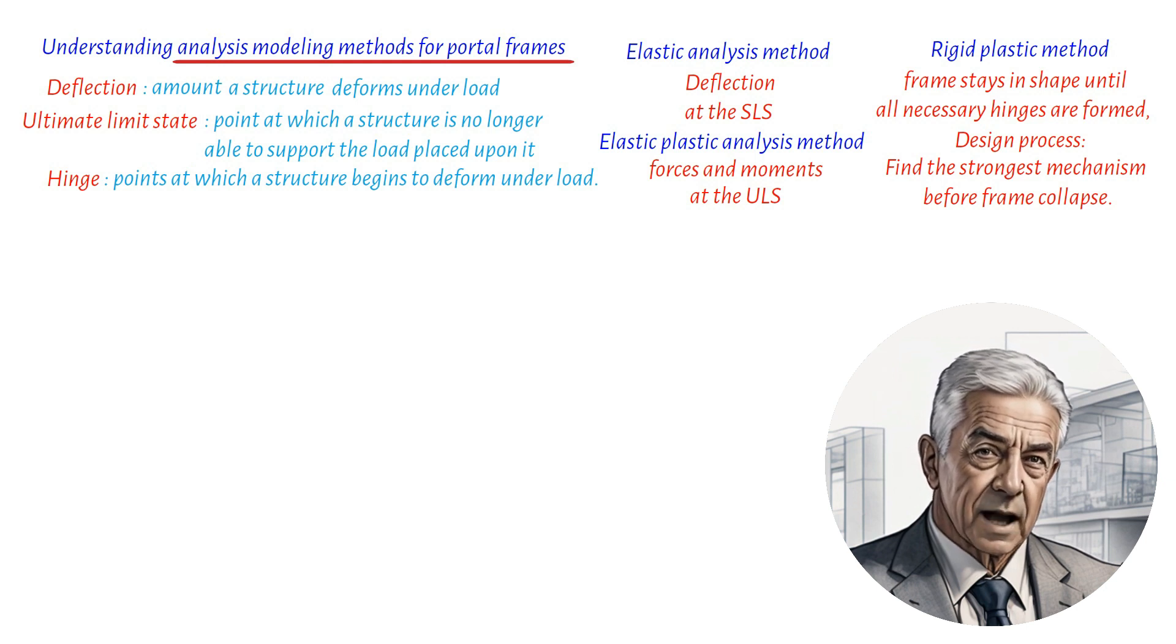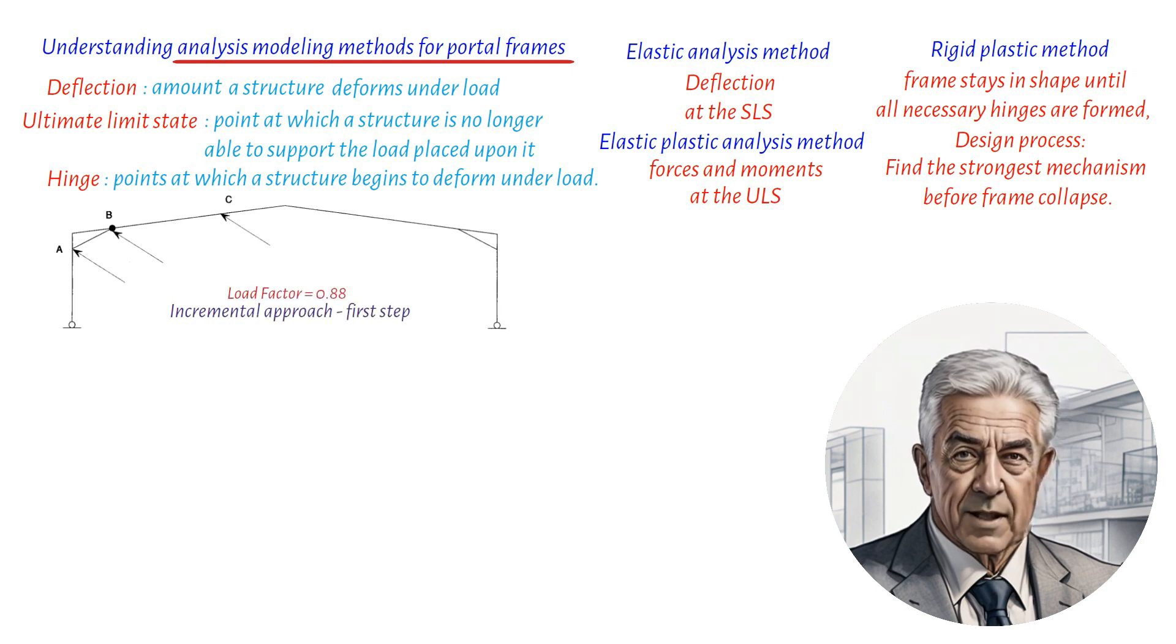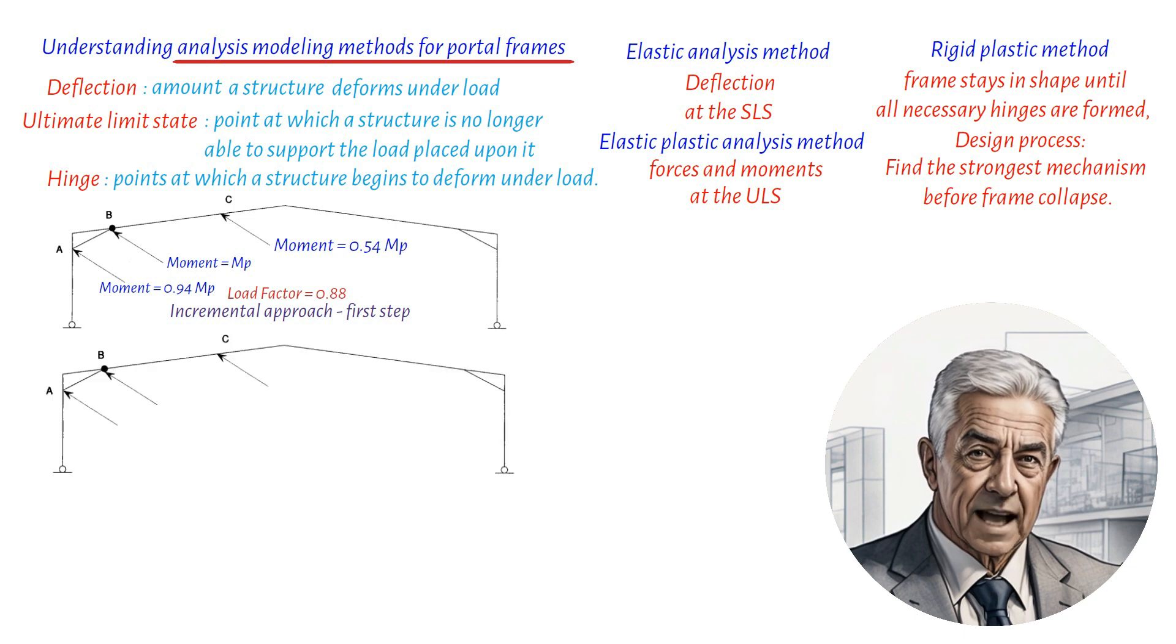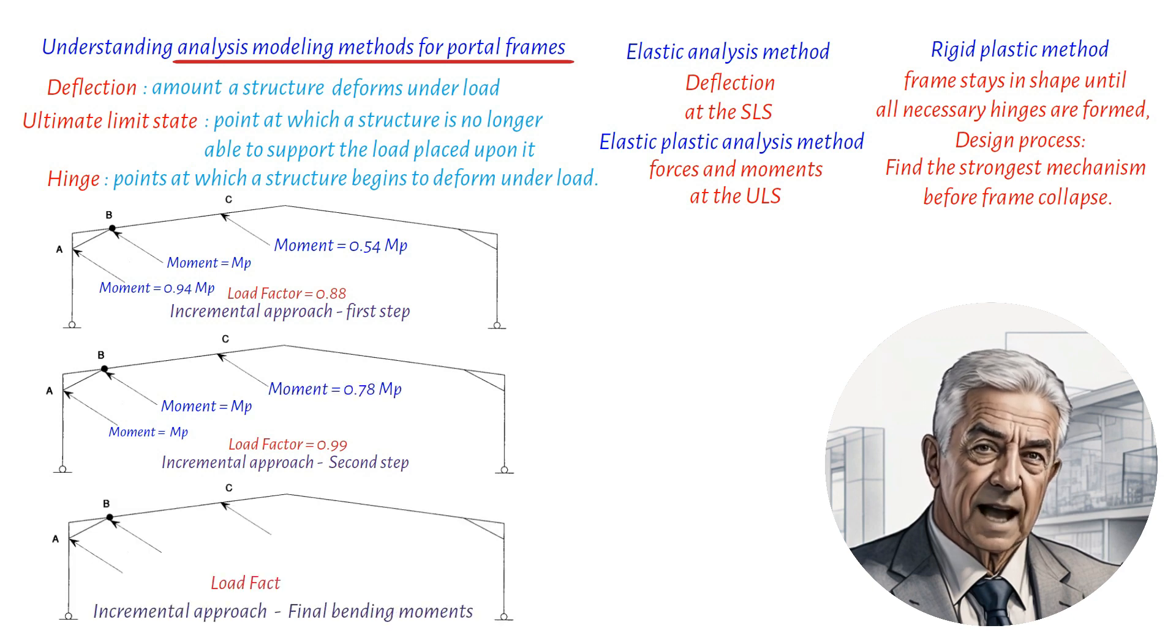Moreover, the elastic plastic method, in addition to finding the collapse load, determines the order in which the hinges form, the load factor associated with each hinge formation and how the bending moments around the frame vary between each hinge formation. The frame is assumed to behave linearly between each hinge formation.